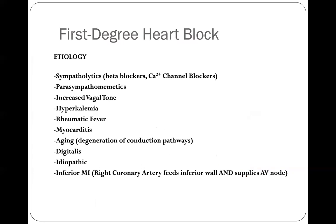The etiology for first degree heart block typically involves things that reduce sympathetic tone or enhance parasympathetic/vagal tone. Other causes include hyperkalemia, rheumatic fever, aging, digitalis, and certain MI-related issues. In highly fit individuals — such as professional athletes — a borderline first degree heart block can occur because their parasympathetic system is so highly engaged at rest, producing resting heart rates in the low-to-mid 40s with a correspondingly extended PR interval.